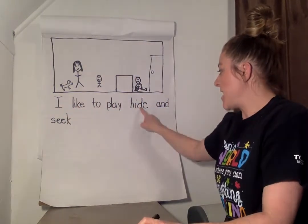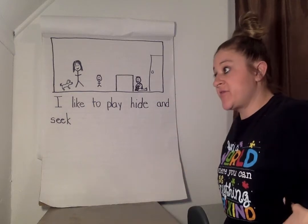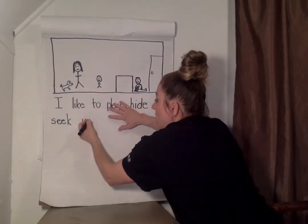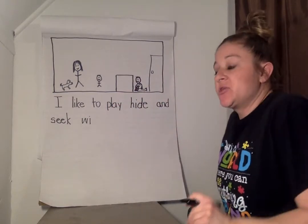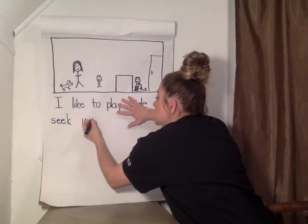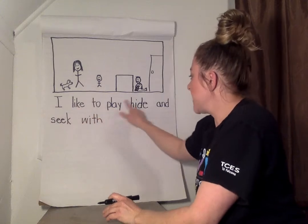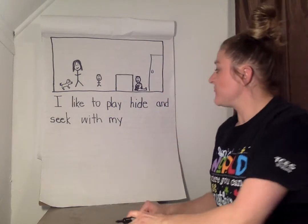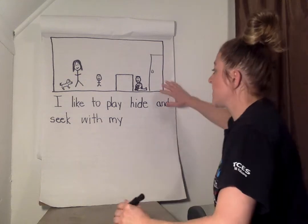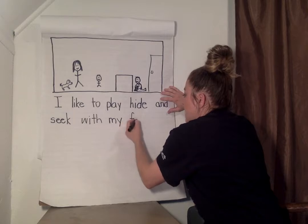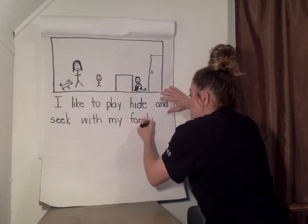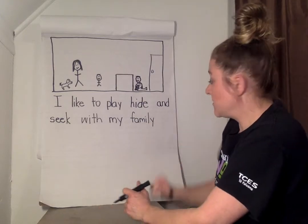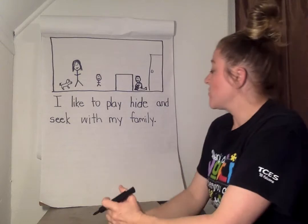Let's read: I like to play hide-and-seek with. W-I-T-H. Do you remember what those two letters T-H say? That's right, T-H. I like to play hide-and-seek with my. M-Y. Family — I'm going to put 'family' up here. If you don't know how to spell it, you can use it for your own writing. F-A-M-I-L-Y. I like to play hide-and-seek with my family. Now I need a period at the end of my sentence. It looks like we're done with that sentence — so we have one sentence.